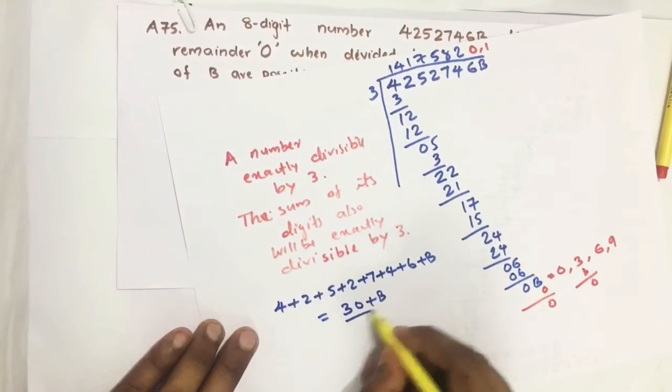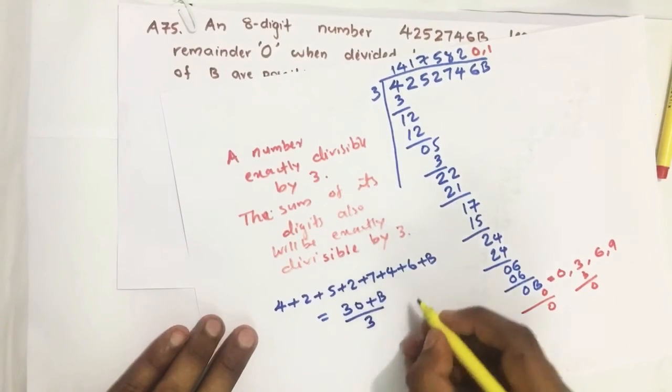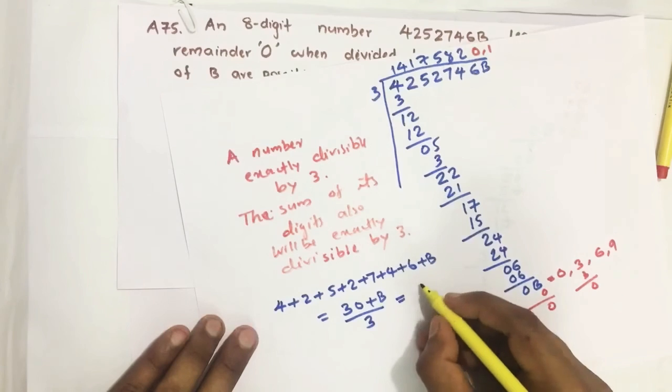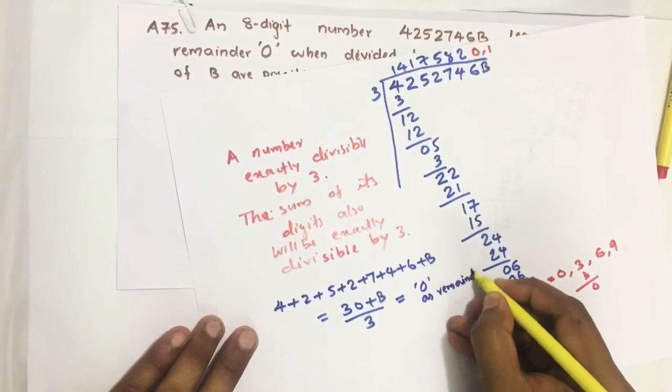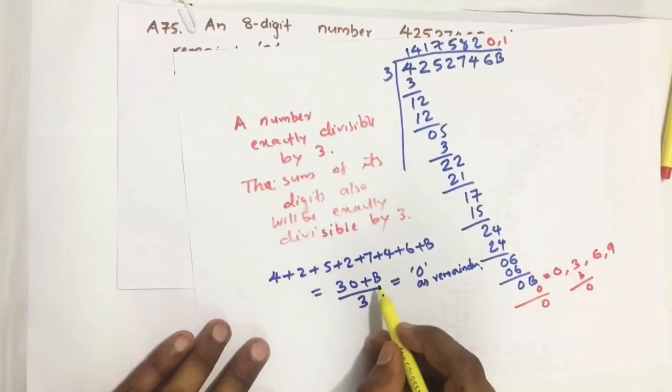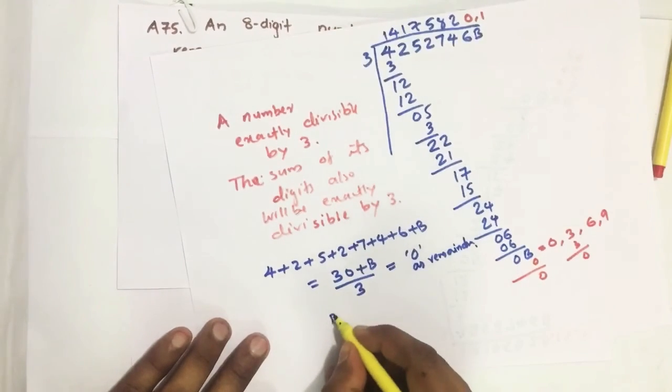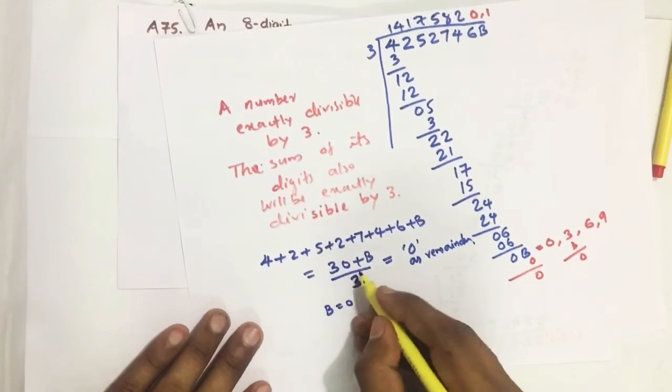So when we divide 30 plus B by 3, we have to get 0 as remainder. Which all values can we give?